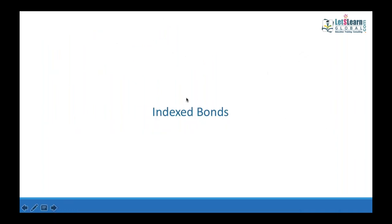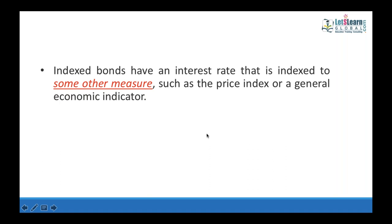Indexed bonds are bonds where the income is based on the index of a particular country — such as India's NSE or BSE Sensex. When the index goes up, the bond interest goes up; when the index goes down, bond interest also goes down. Very few bondholders like to invest in this type because the income is not related to company performance or any fixed rate, but is purely based on an external measure.